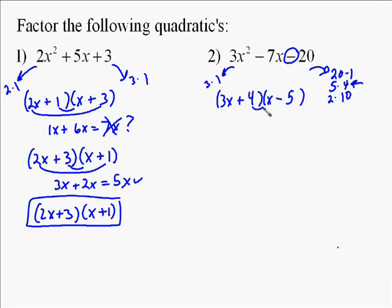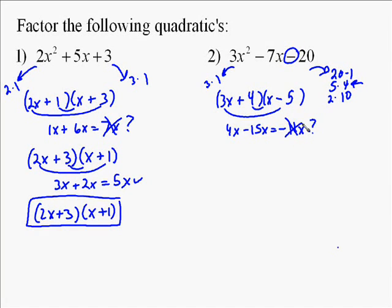So I'm going to put the 4 and the 5 in. Well, 4 times x is 4x, and negative 5 times 3x is negative 15x — that equals negative 11x. That's not what we wanted, so we've got to try something else. Usually before moving to two new numbers, I go ahead and switch the 4 and the 5, giving us 3x plus 5 and x minus 4.